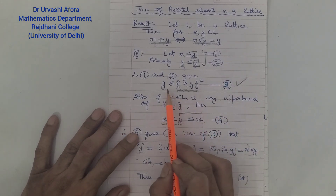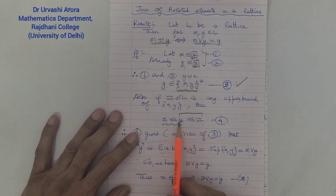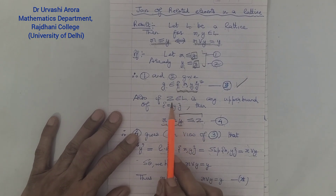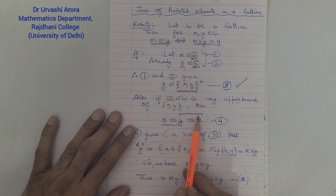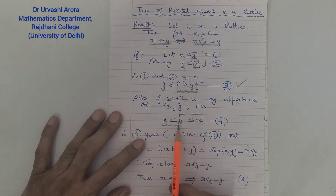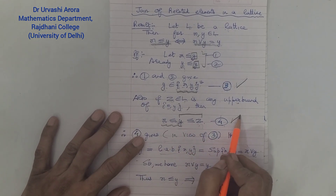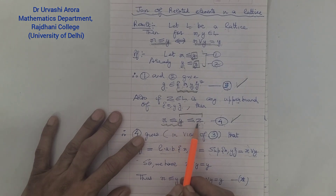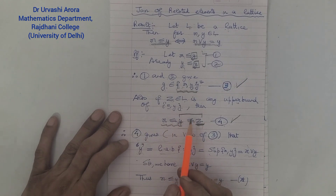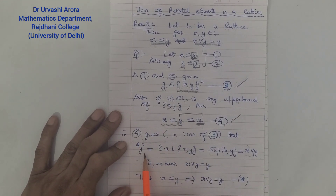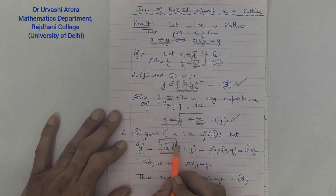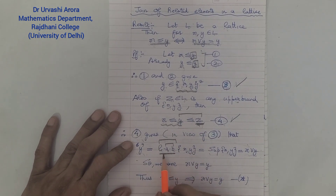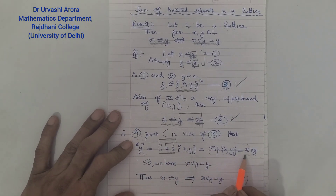From (3) and (4): y is an upper bound of x and y, and y is less than any other upper bound z of x and y — since z was an arbitrary upper bound and y came out to be less than or equal to z. So y is an upper bound of x and y, and y is lesser than every other upper bound z. This means y is the least upper bound of x and y.